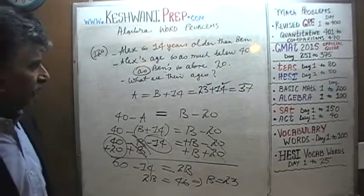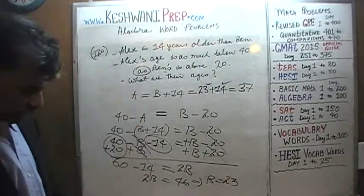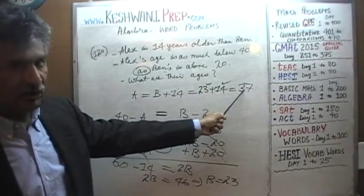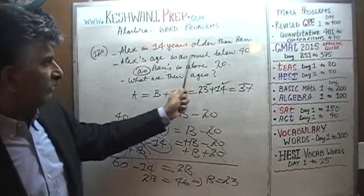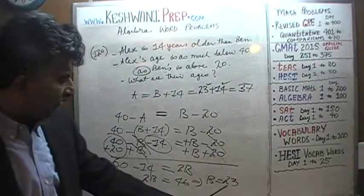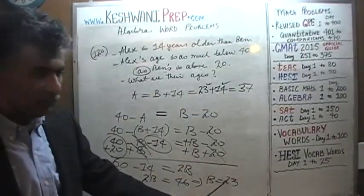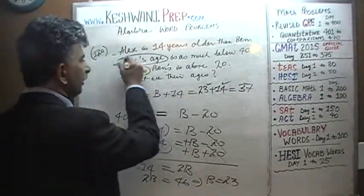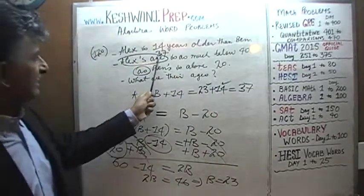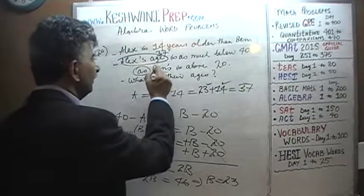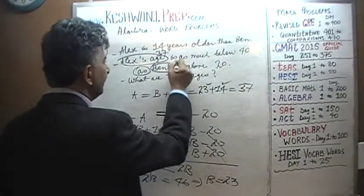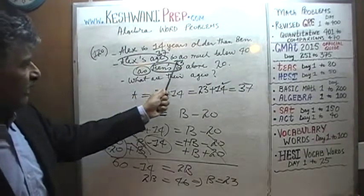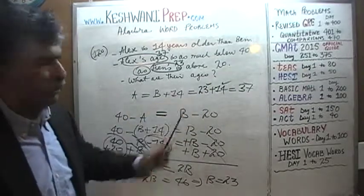Now we can see what the problem meant. Alex's age is 37, and 37 is 3 below 40. Ben's age is 23, and 23 is 3 above 20. So the statement reads: 37 is as much below 40 as 23 is above 20 — which makes sense. The answer checks out.